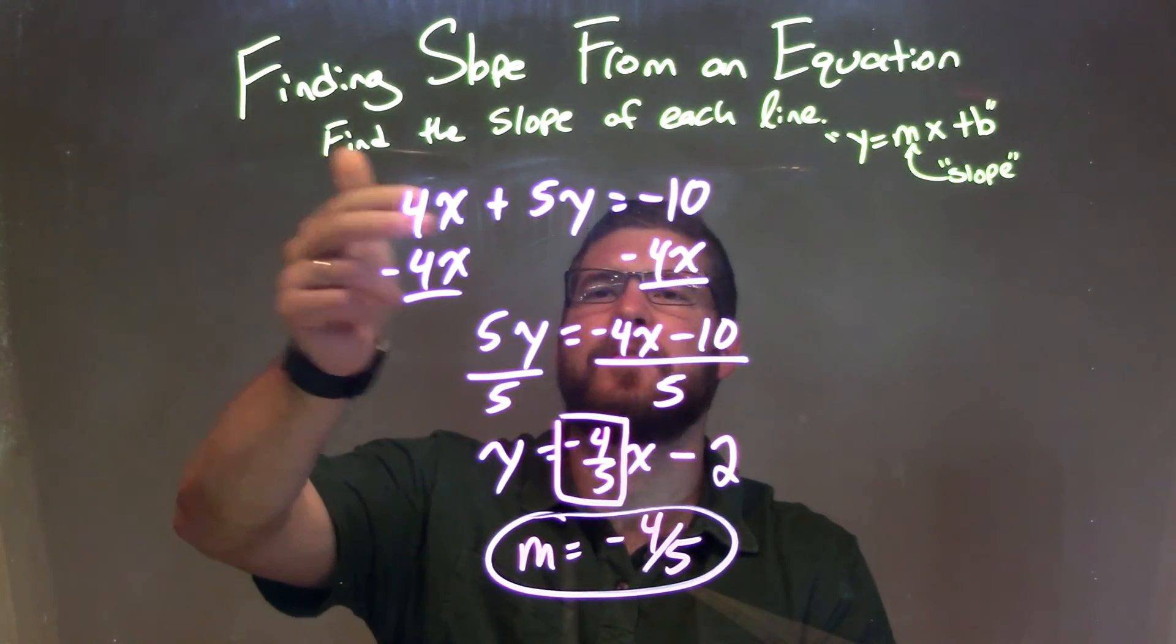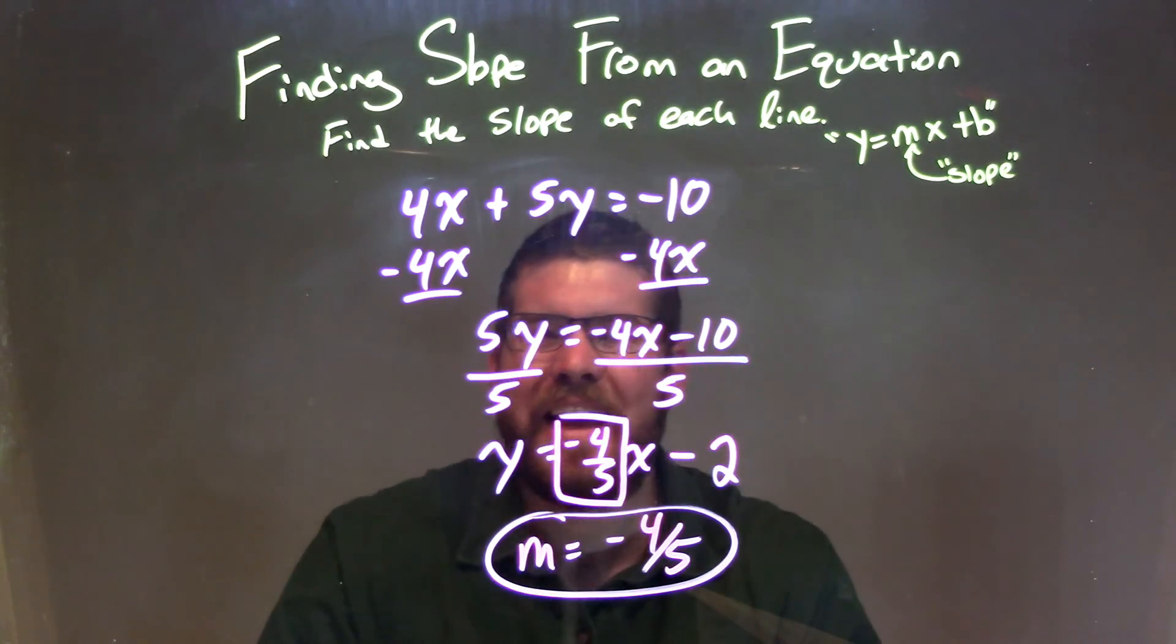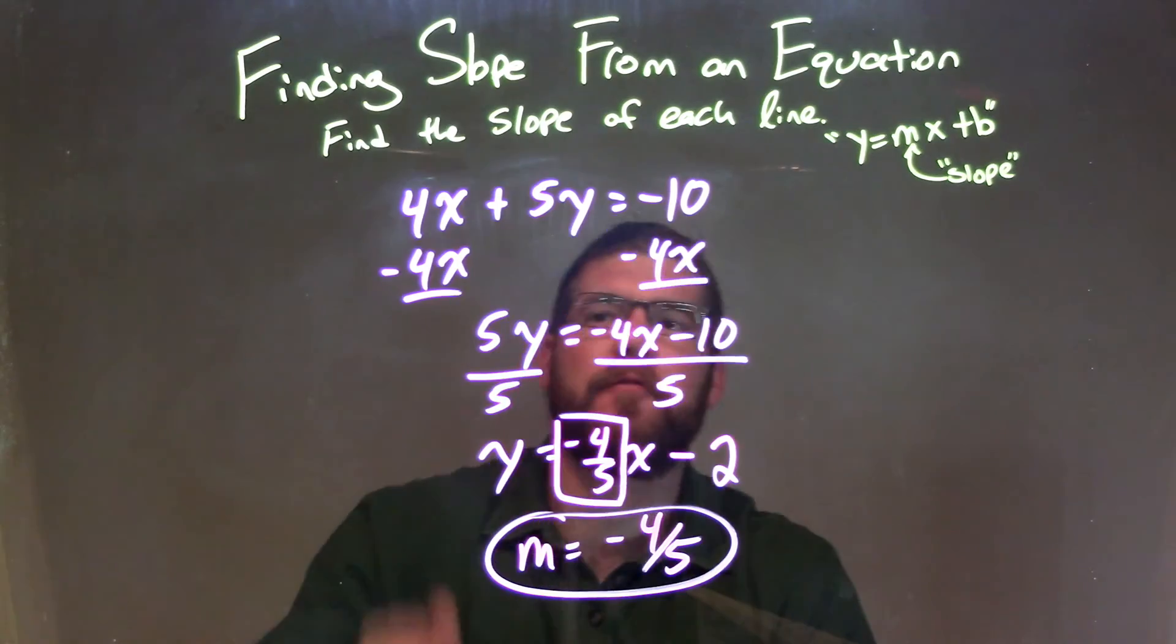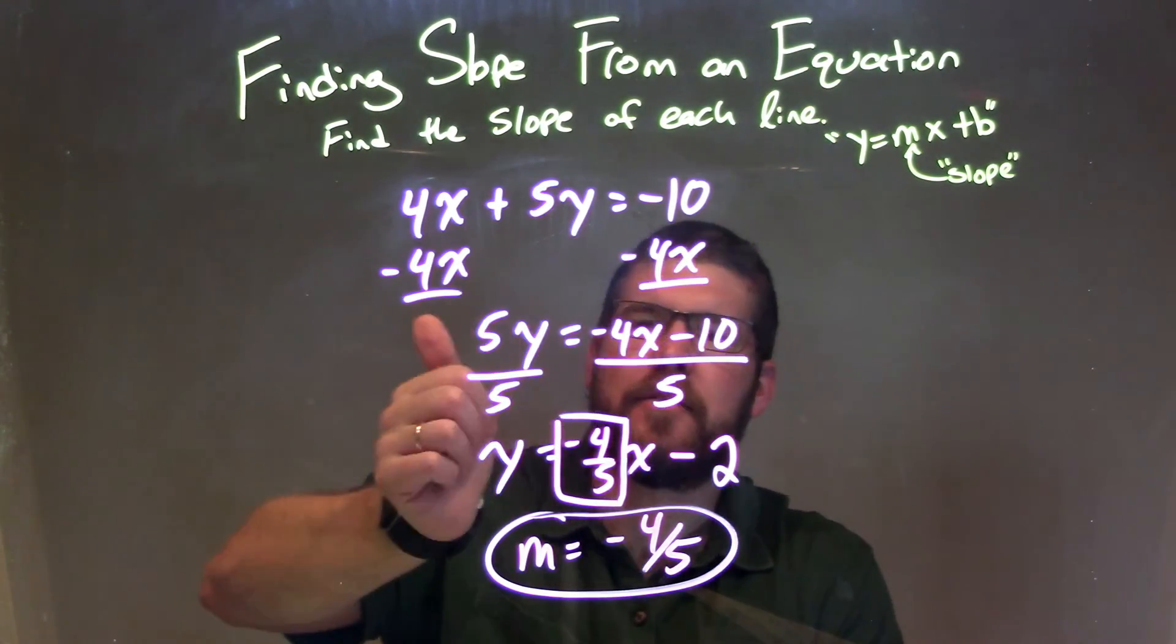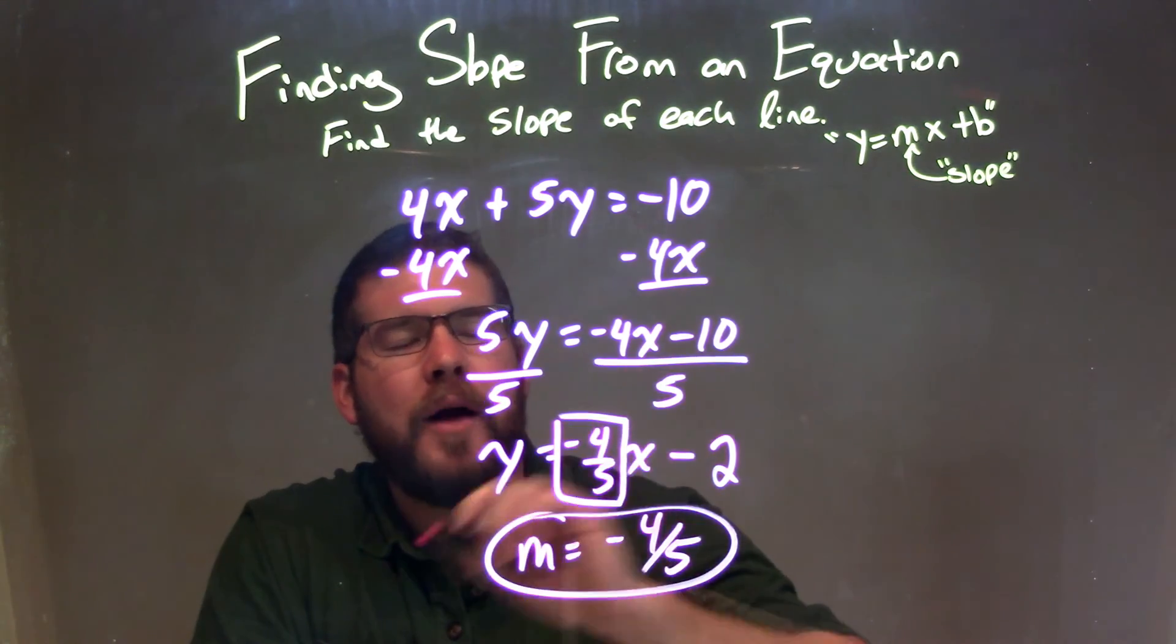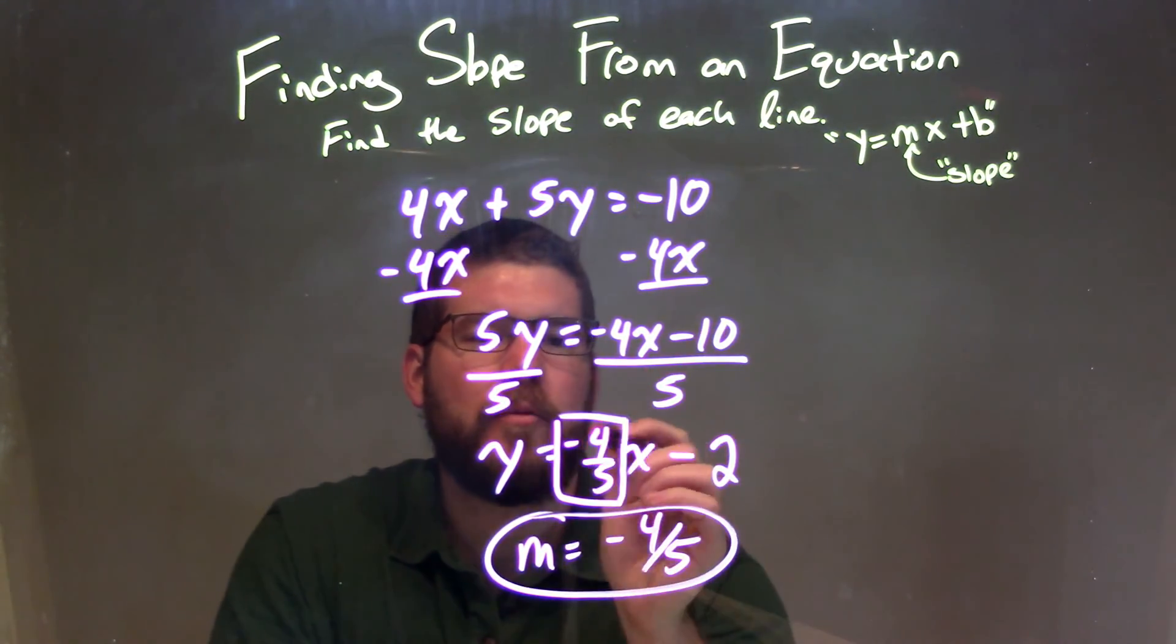So let's recap. We're given 4x plus 5y equals negative 10. I needed to find the slope, so I needed to isolate y. I subtracted 4x from both sides, then divided by 5 on both sides, giving me y by itself. I distributed the 5 and divided it to both parts on the right.